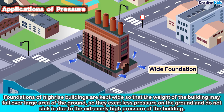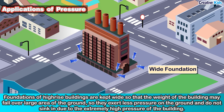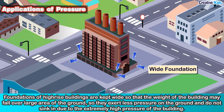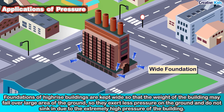Another application: Foundations of high-rise buildings are kept wide. Why? Foundations are kept wide so that the weight of the building falls over a large area of the ground. Pressure is inversely proportional to the area of contact — larger area means lesser pressure. So the wide foundation exerts less pressure on the ground and the building does not sink.